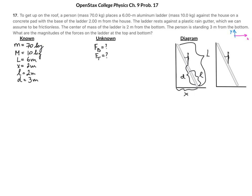The weight of the person acts on the ladder — I'll call this W-person. The weight of the ladder acts at its center of mass, which is at 2 meters — I'll call this W-ladder. There is a normal force acting upward at the base of the ladder — I'll call that the vertical force. Those are the only vertical forces, because the rain gutter is frictionless, so there is no force along the wall.